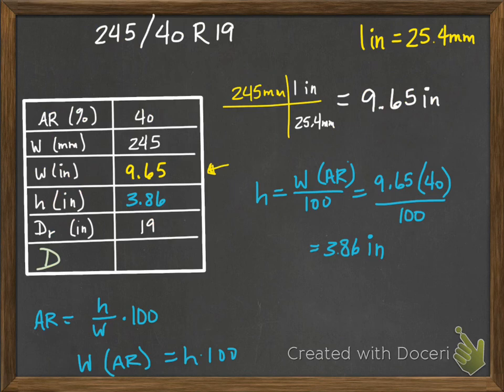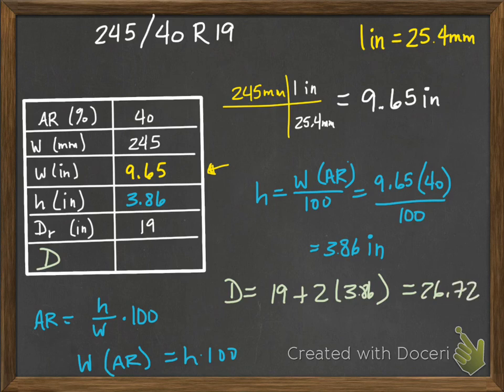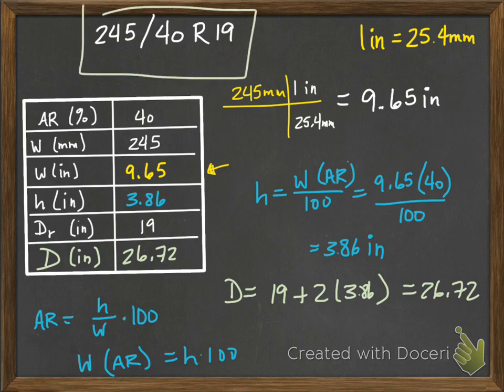So I can go now, now that I know the height, I can go back here and I can fill that in. My overall diameter of my entire wheel is going to be 19, plus two times 3.86, and this is all going to be in inches. So if I do that, 3.86 times two, plus 19, the overall diameter of my wheel, then, is 26.72 inches. So I would put that here, 26.72 inches. So those are all of the dimensions of the tire just from this listing on the tire itself.